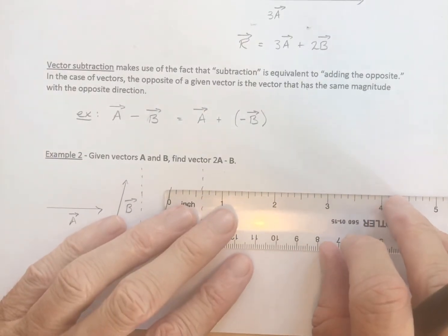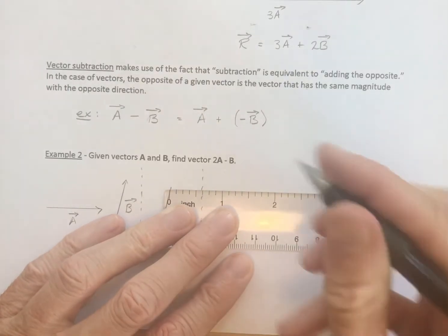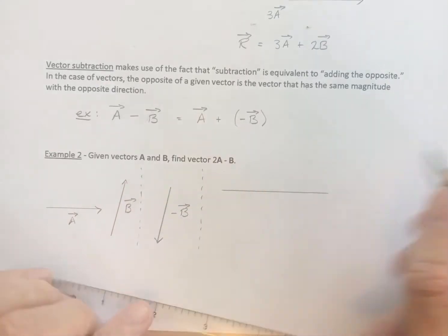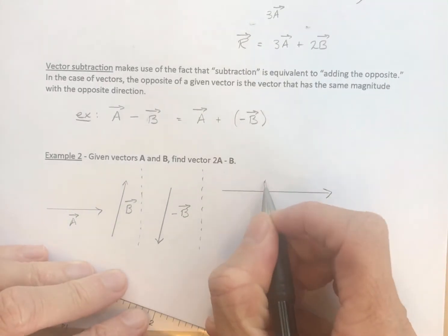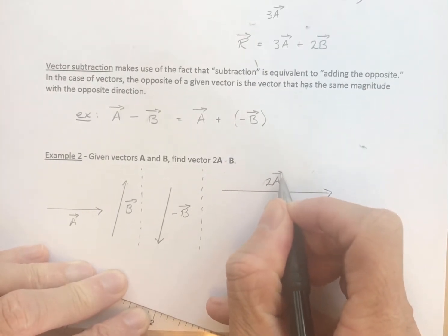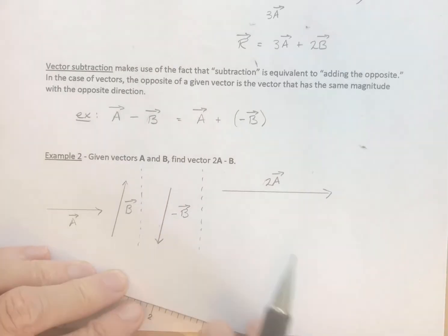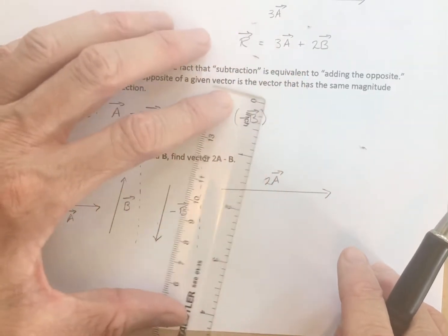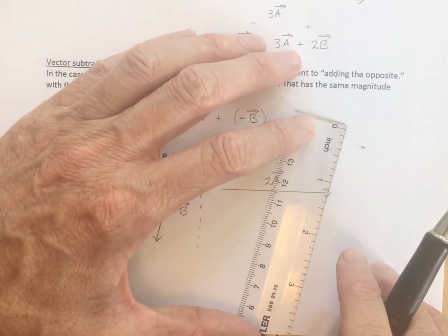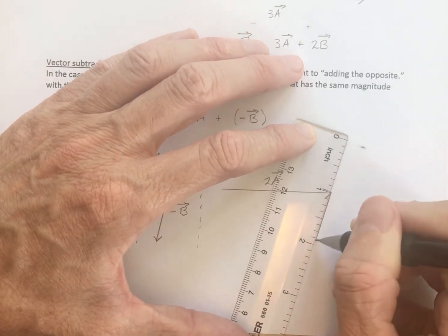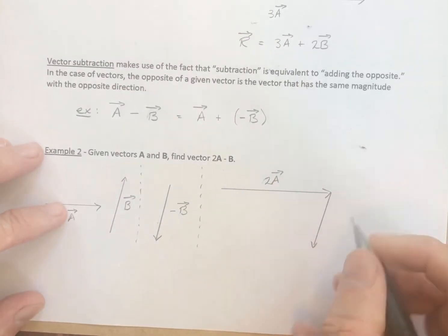Now I'm going to add 2a plus the opposite of b. So here we go. Let's do 2a. Vector a, of course, is 1 inch that's horizontal, so we'll do a vector a that is 2 inches horizontal. There is vector 2a. And I'm going to add this one. So I'm going to do head to tail with this one. So, we'll go down 1 inch. So this is the opposite of b.